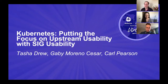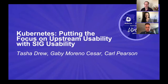My name is Gabby Mernos-Cesar. I'm at IBM. I started contributing to SIG Usability about a year ago when it got started, and I'm a UX designer on the Kubernetes design team. I'm Carl Pearson. I am a UX researcher formerly at Red Hat, and I've been involved with the SIG for about half a year now.